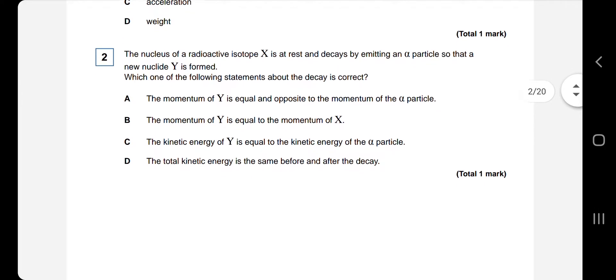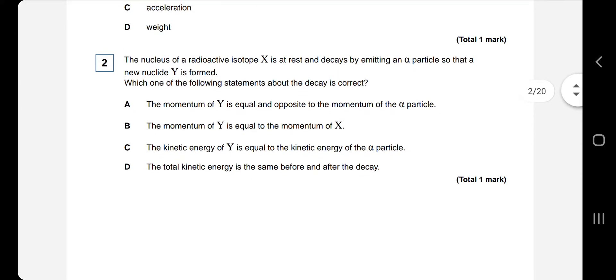Next question, question 2. So the nucleus of a radioactive isotope X is at rest and decays by emitting an alpha particle so that a new nuclide Y is formed. So this is an explosion question, a conservation of linear momentum. So the momentum of Y, which we probably could say goes in this direction, would be equal yet opposite to the momentum of the alpha particle. So the alpha particle would go in the opposite direction. Conservation of linear momentum, A must be the answer.